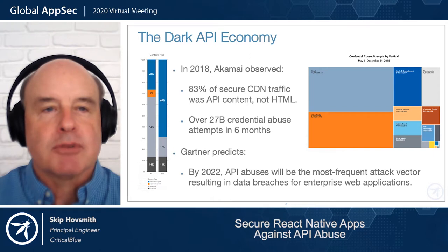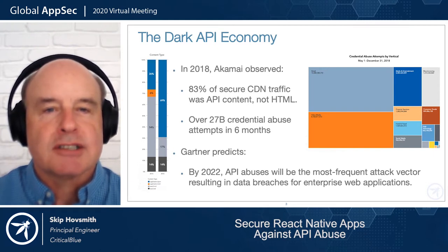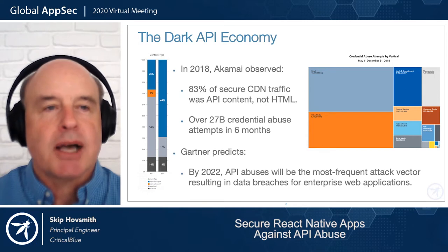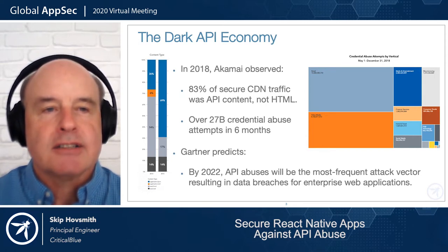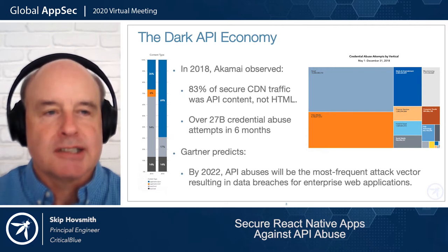These attacks ranged from retail to video, entertainment, and financial systems — across the map. APIs are clearly a very desirable and fat target for hackers trying to get into back-end systems.